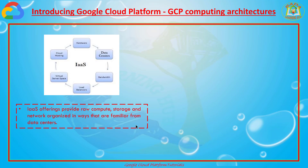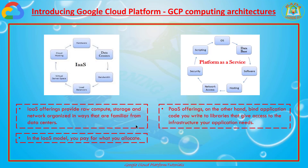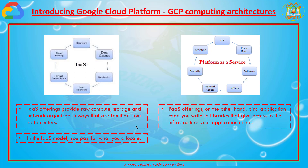Coming to PaaS — platform as a service offers, on the other hand, to bind the application code you write to libraries that give access to the infrastructure your application needs. After writing the code, we need to push it into the infrastructure as a service, where there is a hosting server, hardware, and data centers. That is what comes under platform as a service.